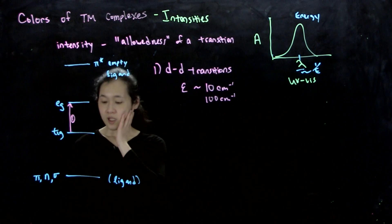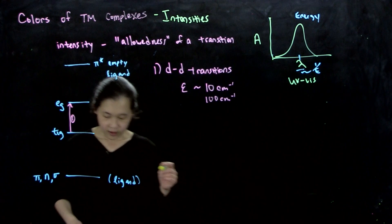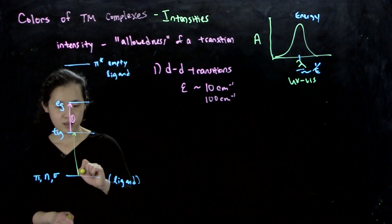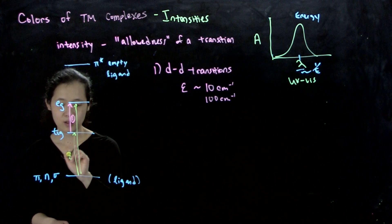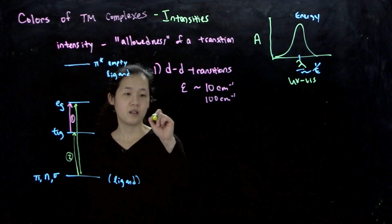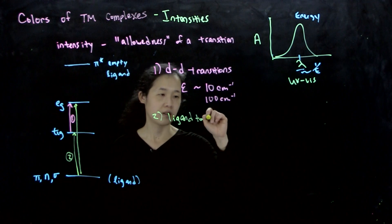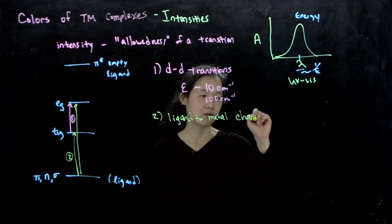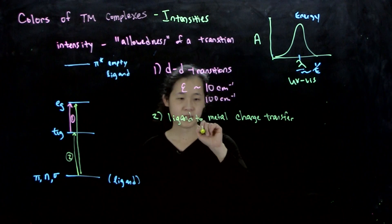But on the other hand, we could talk about going from, let's say, from these filled ligand orbitals. We can go to empty d orbitals, whether they're t2g or eg. So this will be type 2. So these are called ligand to metal charge transfer, LMCT.